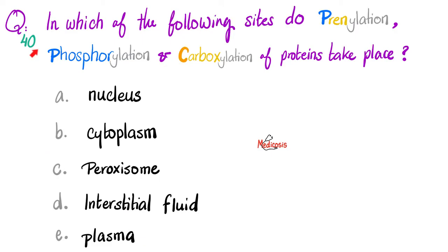Question 40, because the previous 39 are in previous videos. In which of the following sites do prenylation, phosphorylation, and carboxylation of proteins take place? Is it the nucleus, the cytoplasm, the peroxisome, the interstitial fluid, or the plasma? Please pause and try to answer this yourself.